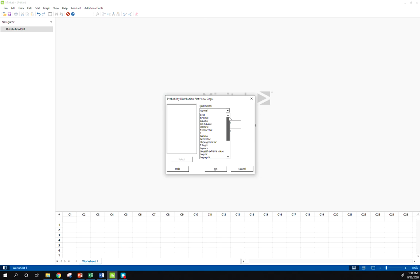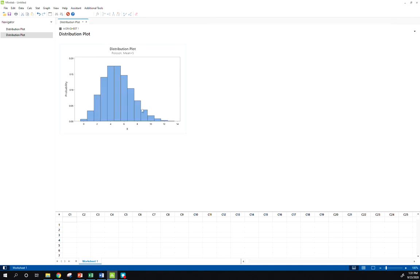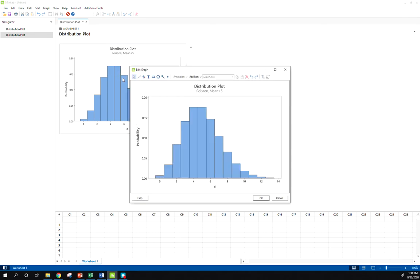We have a long list of distributions. By default it'll be on your normal distribution, your standard normal distribution, but we here are using Poisson with the parameter or mean equal to five. So it'll pop out our graph, that's what it looks like.